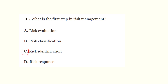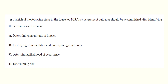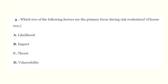Question 2: Which of the following steps in the NIST risk assessment guidance could be accomplished after identifying threat sources and events? A) Determining magnitude of impact, B) Identifying vulnerabilities and predisposing conditions, C) Determining likelihood of occurrence, or D) Determining risk. The correct answer is B - identifying vulnerabilities and predisposing conditions, which comes immediately after identifying threat sources and events in the NIST assessment guidance.